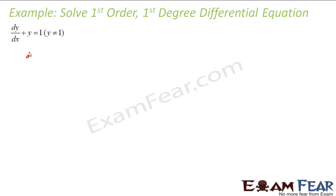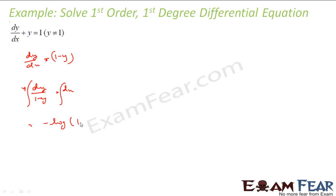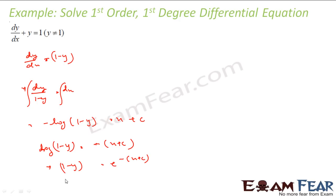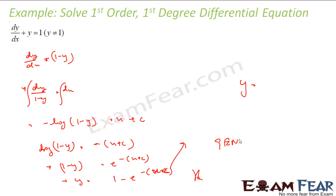Let us take another example: dy/dx + y = 1. This is also very simple — you can write it as dy/dx = 1 - y. There is no x component, only y here, so I write dy/(1 - y) = dx. Integrate both sides: the left side gives -log(1 - y) and the right side gives x + c. If you want the final equation in y: log(1 - y) = -(x + c), so 1 - y = e^(-(x+c)), giving y = 1 - e^(-(x+c)). Here also there is a constant term, so this is also a general solution.